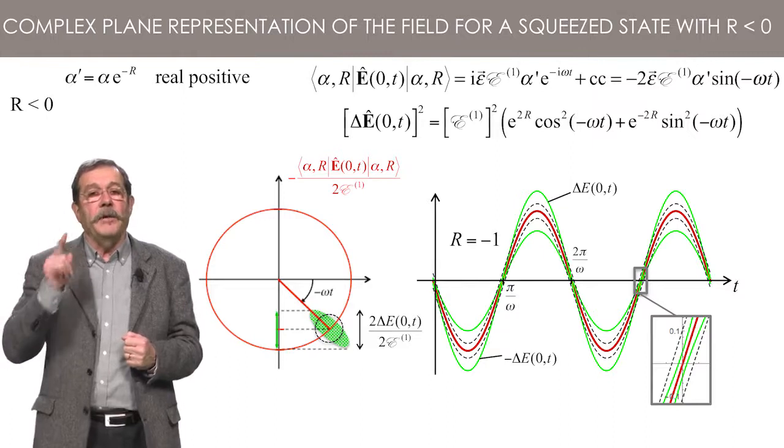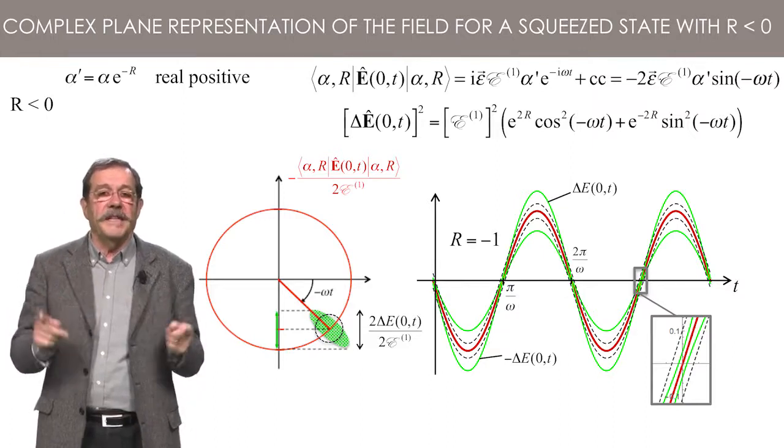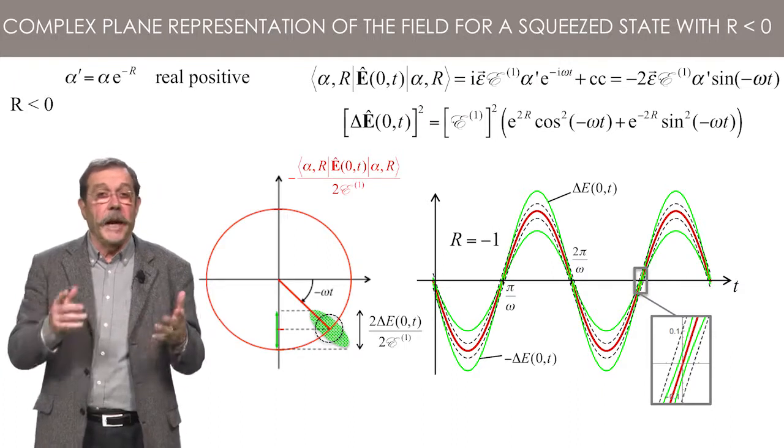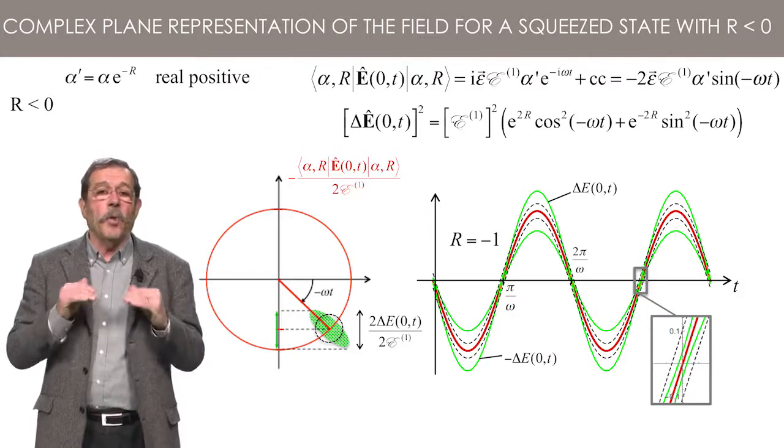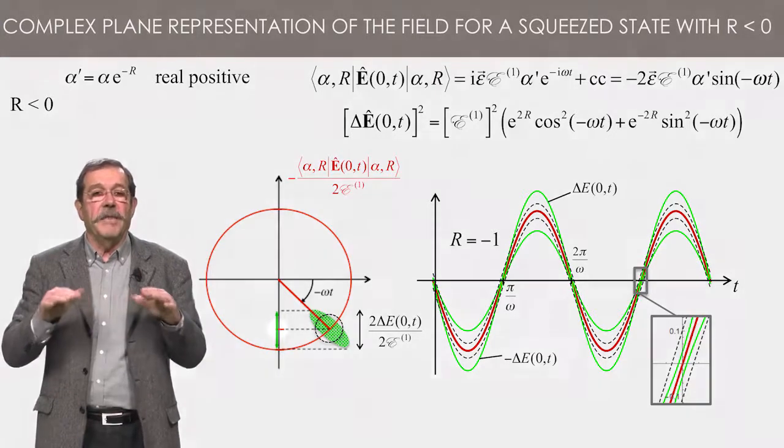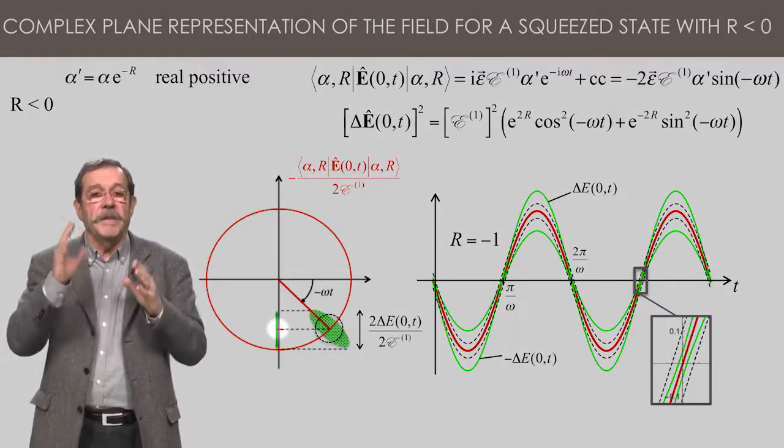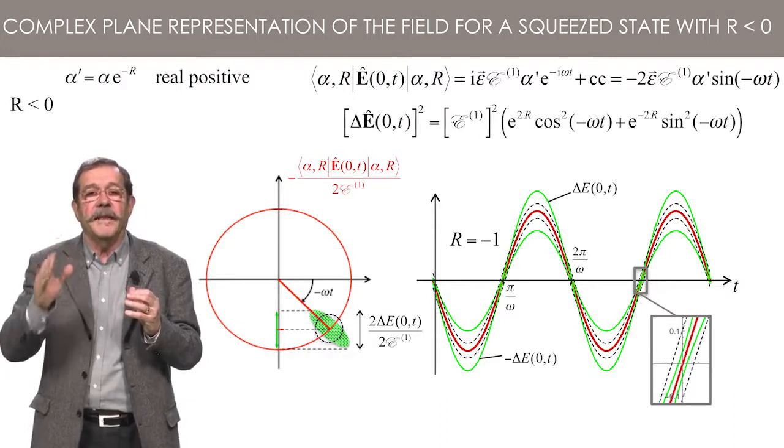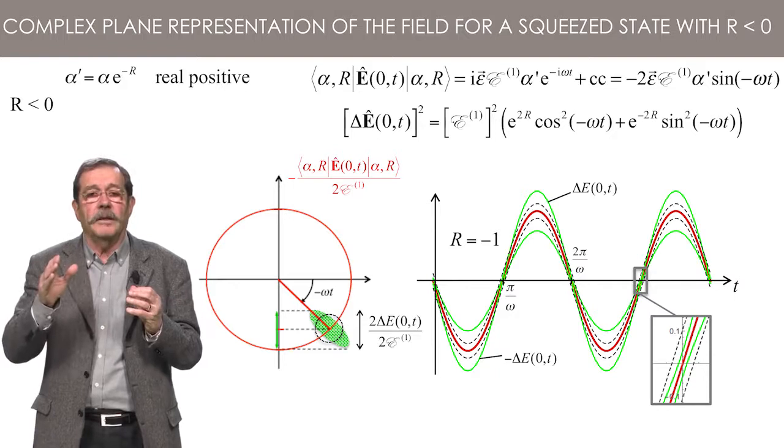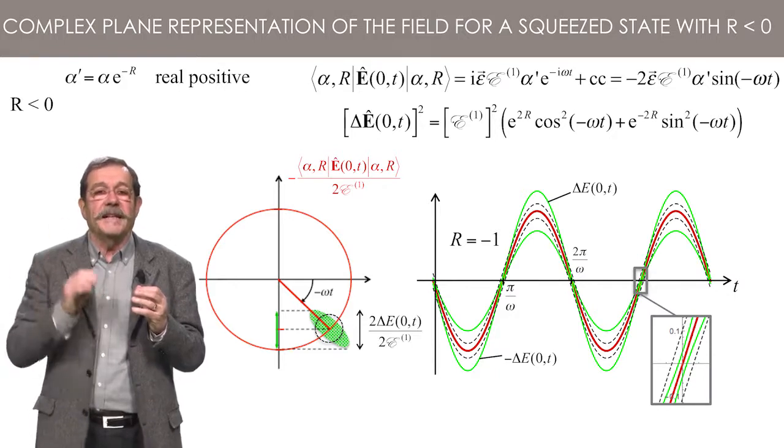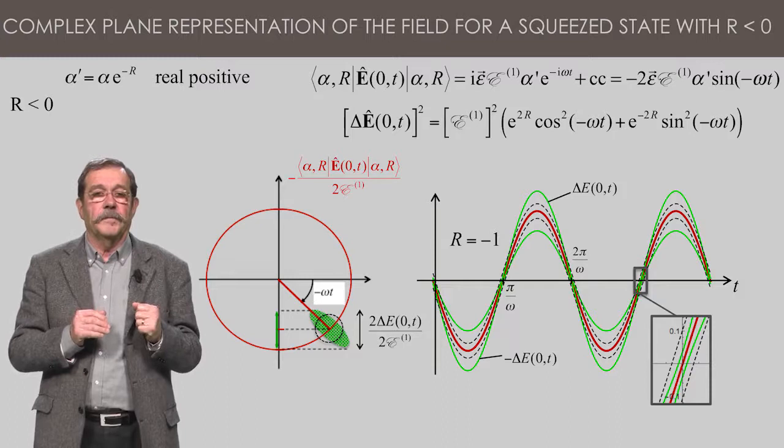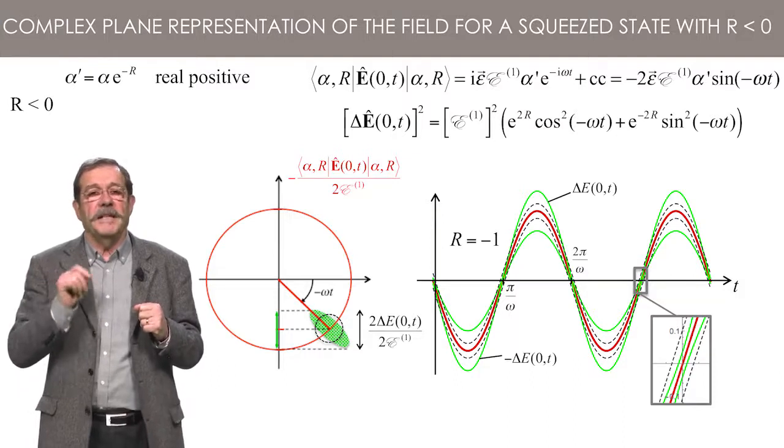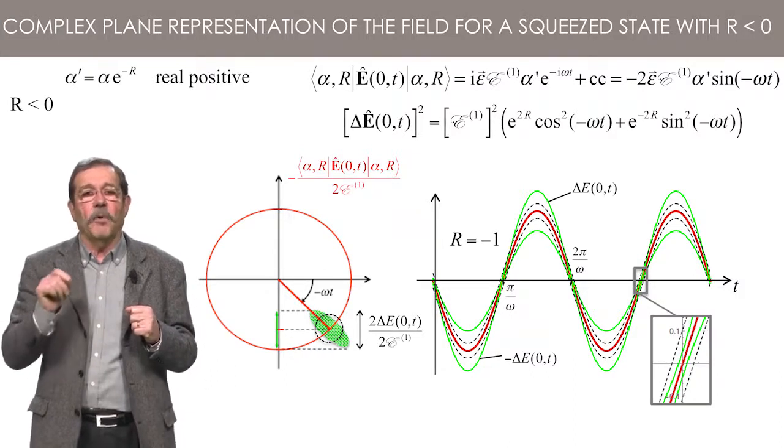It is illuminating to use a complex plane representation to better understand the evolution of the electric field average and dispersion. As in the case of a quasi-classical state, the average is given by the projection on the imaginary axis of the complex number minus 2 alpha prime E1 times the complex exponential evolution factor, rotating at angular frequency minus omega. But when it comes to dispersion, the situation is dramatically different from the case of quasi-classical states.